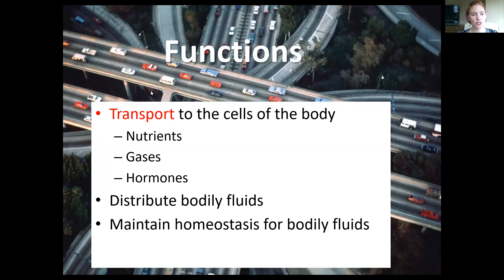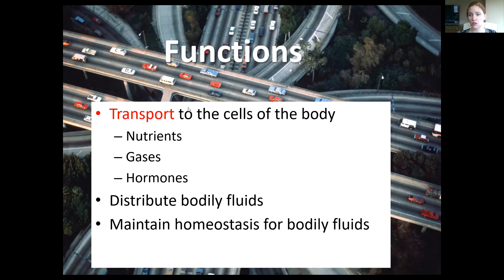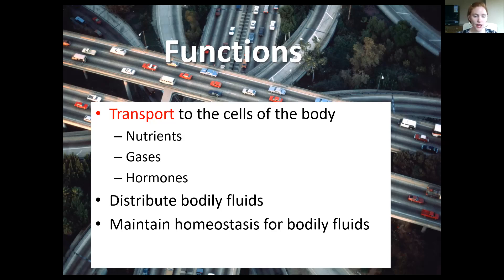The general function of the cardiovascular system is that it transports things around the body — things like nutrients coming off the digestive system that need to get to the cells, gases like oxygen and carbon dioxide that need to move between the respiratory system and cells, and hormones from the endocrine system that are transported to where they need to go.